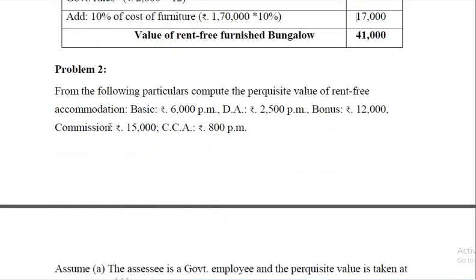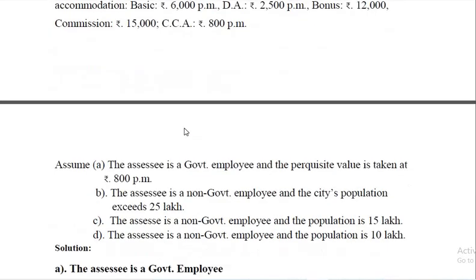Now we will go on to the second problem: compute the perquisite value of rent-free accommodation. Basic salary should be taken. DA — unless it is mentioned that it enters retirement benefits, it is not to be taken. Bonus and commission are part of salary. CCA (City Compensatory Allowance) is also part of salary.